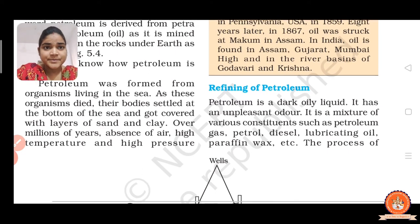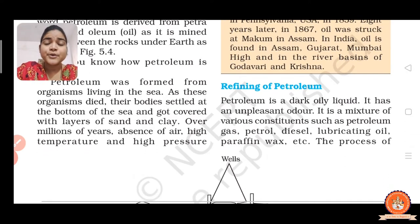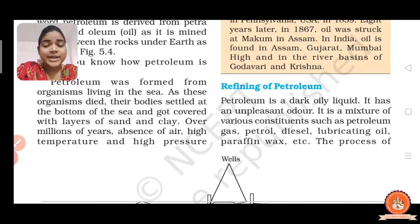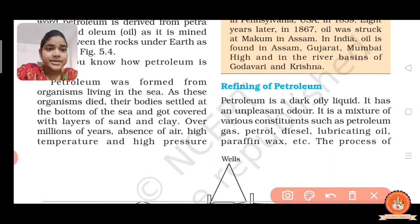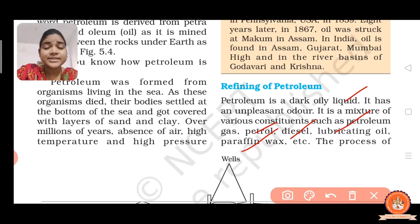Now, refining of petroleum. We know about petroleum, but how do we refine it? From refining we get valuable substances such as petroleum gas, petrol, diesel, lubricating oil, paraffin wax, kerosene, etc. Petroleum is a dark oily liquid with an unpleasant odor — meaning it has an unpleasant smell.